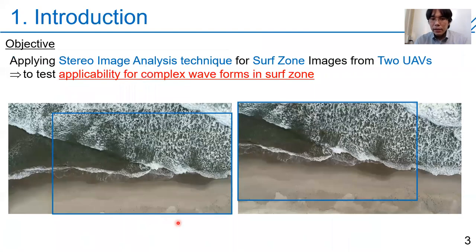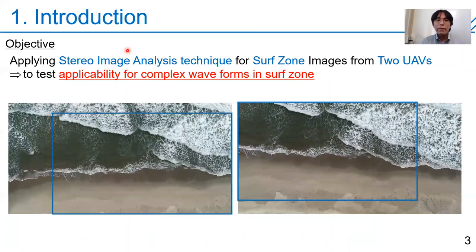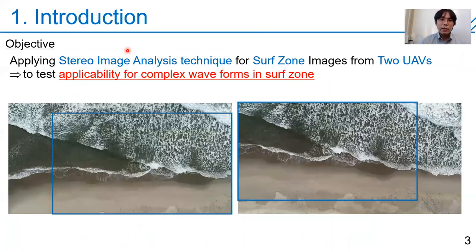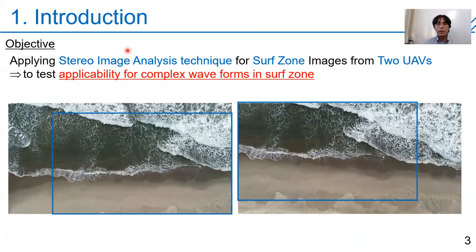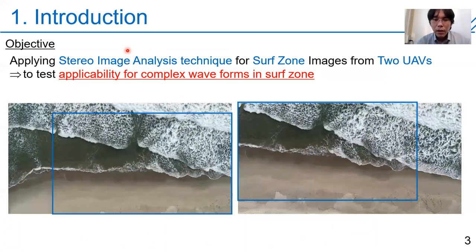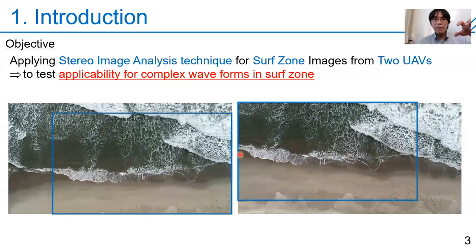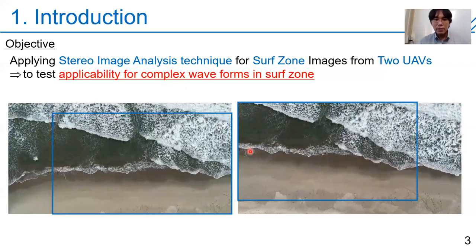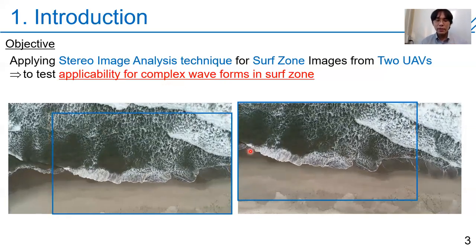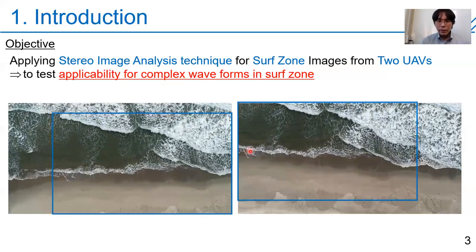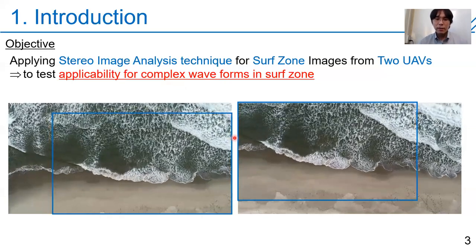In this study, I want to try to make a 3D analysis to obtain the waveform. I applied the stereo image analysis technique for surf zone images from two UAVs to test applicability for complex waveforms in the surf zone. This kind of technique using two overlapping images is currently getting more common for topography measurement by UAVs, and I will apply a similar technique to surf zone measurement.